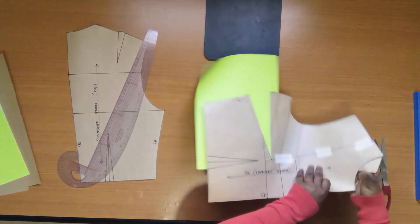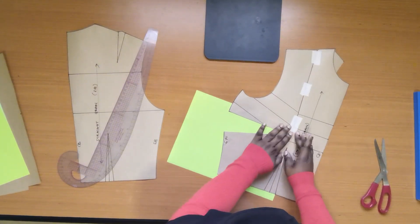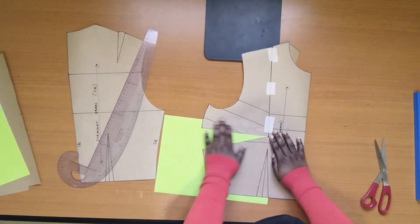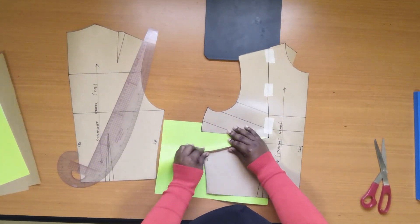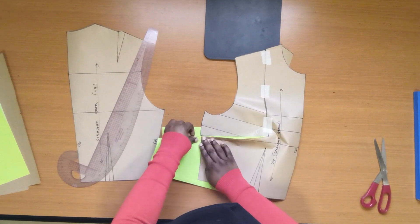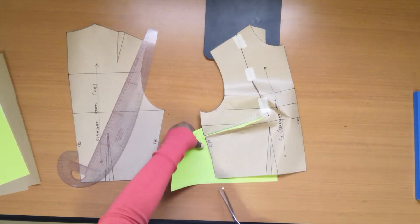To get an accurate dart cap, make sure to fold the dart facing downwards towards the waistline. Trim the excess paper.